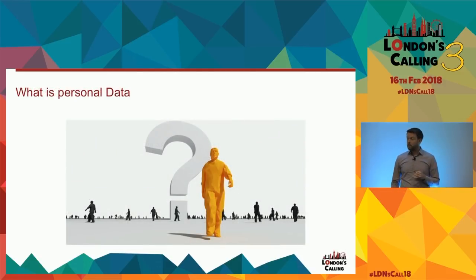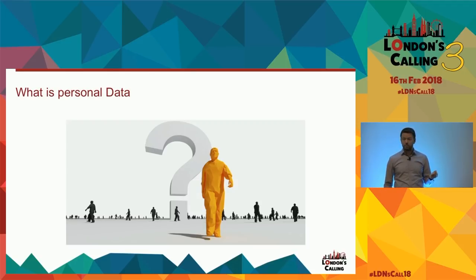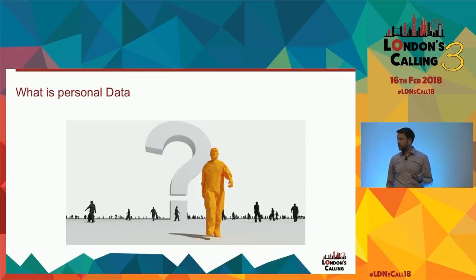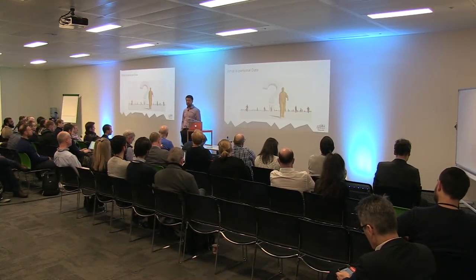Let's talk about what personal data is, because that's probably the most important thing. The GDPR doesn't apply to all data — it applies to personal data. There are two types: general personal data, like your age or address, but your age alone is not personal data if you can't identify someone from it. If you have someone's date of birth, address, and name together, that becomes personal data. There's also sensitive personal data — race, ethnic origin, genetic data, sexual orientation — where GDPR has stricter rules. If your company processes a lot of that, definitely get legal advice.